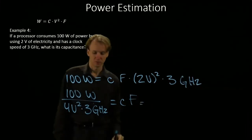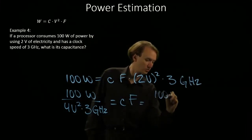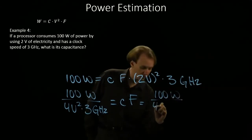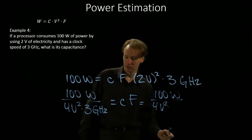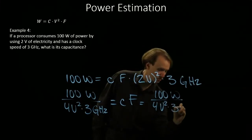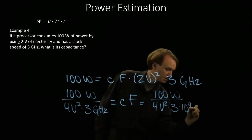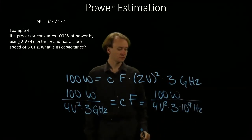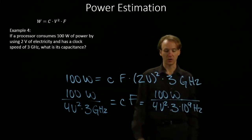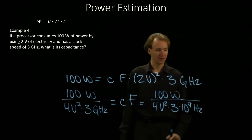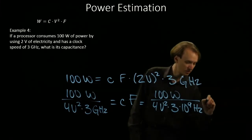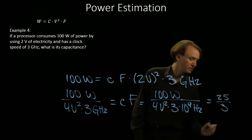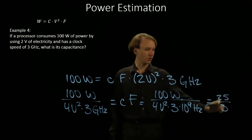So we'll have 100 watts divided by 4 volts squared times 3 times 10 to the ninth hertz. Obviously, 100 divided by 4 works out very nicely, and we'll get 25 over 3 for our main number.